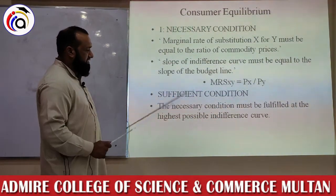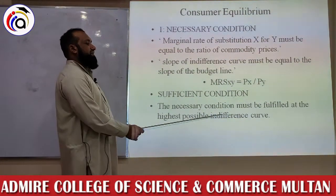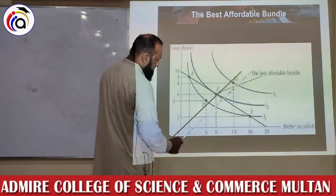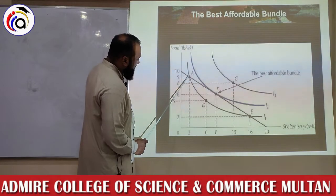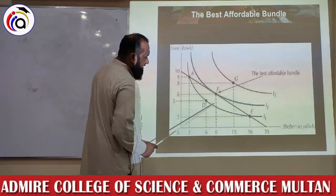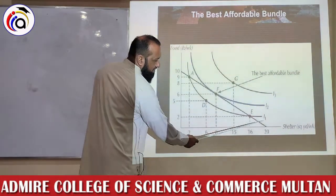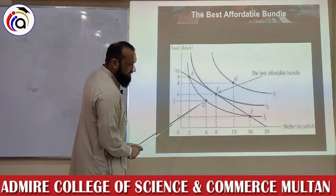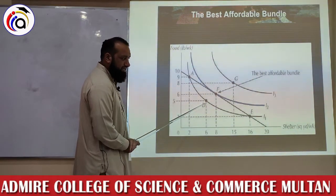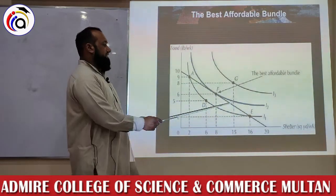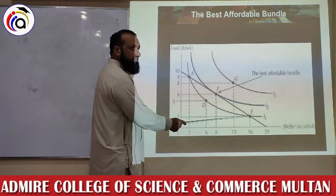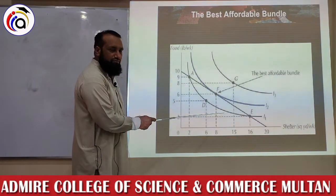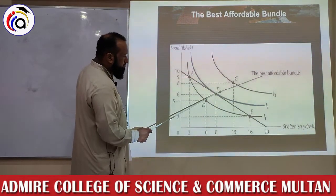The sufficient condition: the necessary condition must be fulfilled at the highest possible indifference curve. In the diagram, there are three indifference curves I1, I2, and I3. If the consumer purchases at point A, D, or E, he is on I1. Point E is such that his entire budget is spent; point A also exhausts the entire budget; but another point does not exhaust the full budget and is therefore not desirable. At point E the budget is fully spent, but I1 shows a low level of satisfaction — a higher indifference curve shows a higher level of satisfaction.